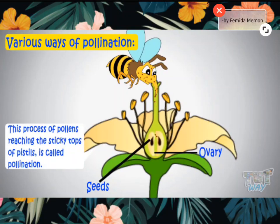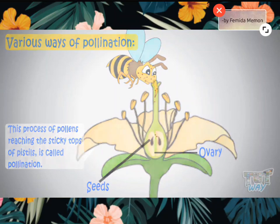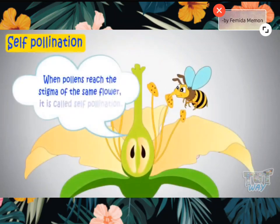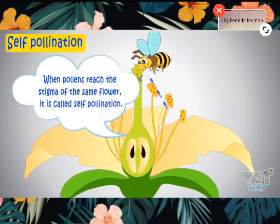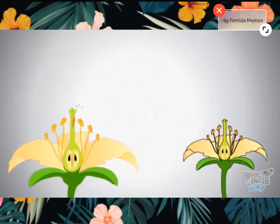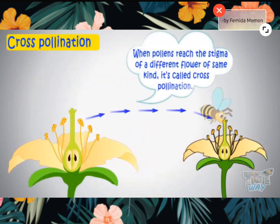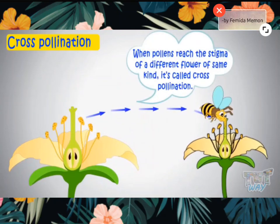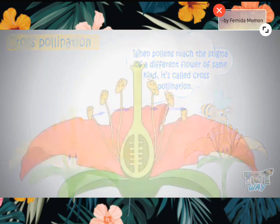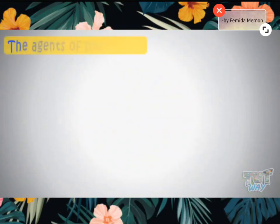Pollens may reach the stigma of the same flower or the stigma of a different flower. When pollens reach the stigma of the same flower, it is called self-pollination. When pollens reach the stigma of a different flower of the same kind, it is called cross-pollination. Now we will learn about different agents of pollination.